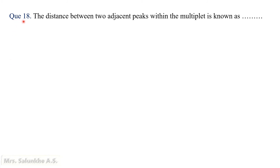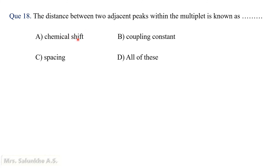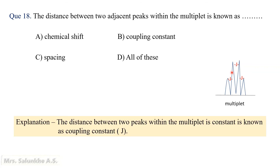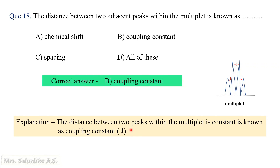Question 18: The distance between 2 adjacent peaks within a multiplet is known as — chemical shift, coupling constant, spacing, or all of these. In a multiplet, the signal is split into different lines. The distance between 2 adjacent lines within the multiplet is constant, and that constant is known as the coupling constant. Therefore, the correct answer is coupling constant.